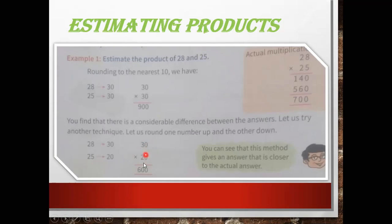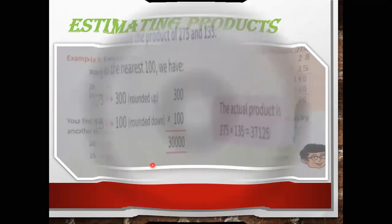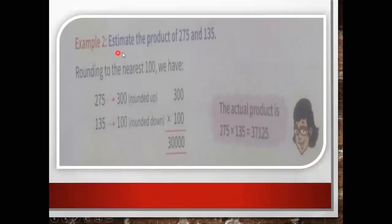Now multiply 30 × 20. When you multiply, you get 600. This 600 is much closer to the actual answer of 700, so we can use this round-up-and-down method for estimating. Next, let's see one more example: estimate the product of 275 and 135.